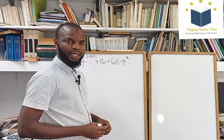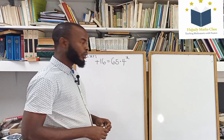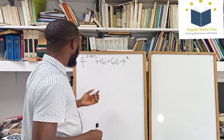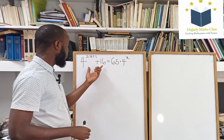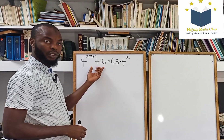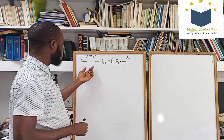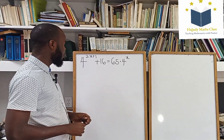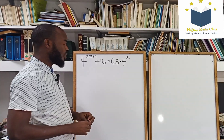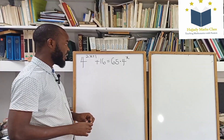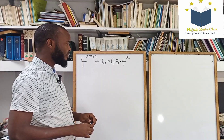Hello viewers, welcome to Adon Math Class. Today, we want to solve for x in this equation. I'm having 4 to the power of 2x plus 1 plus 16 equals 65.